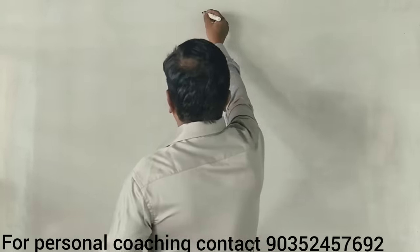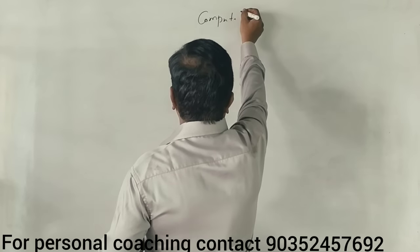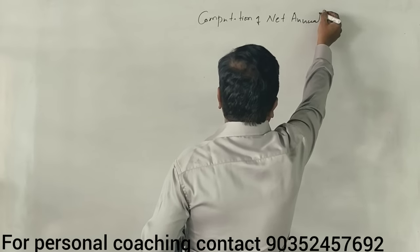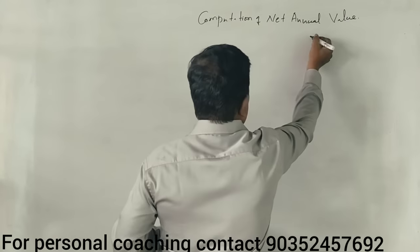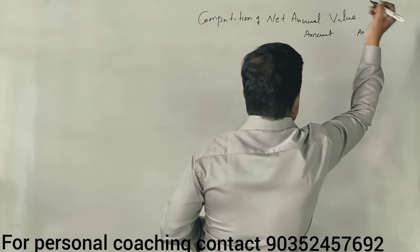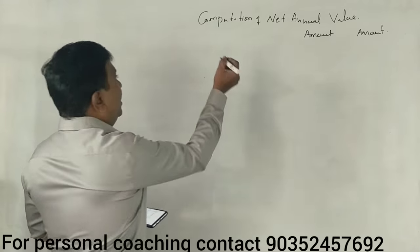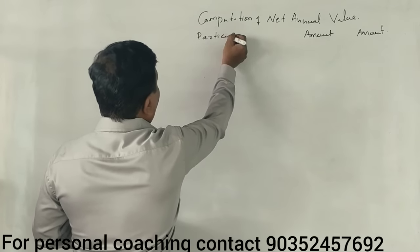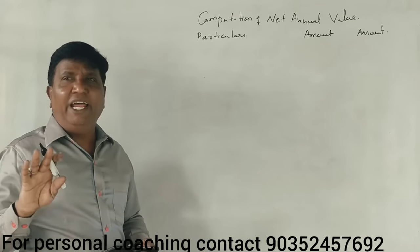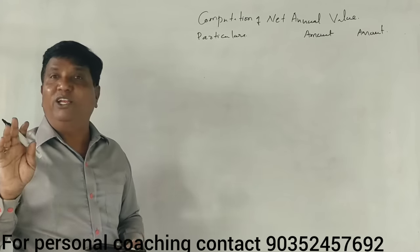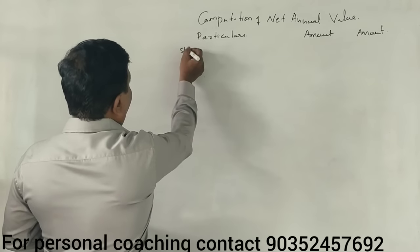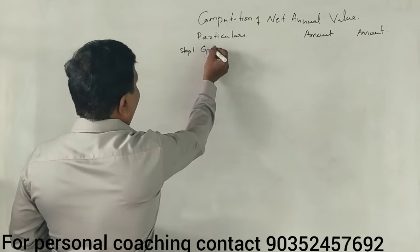First, computation of Net Annual Value. What is Net Annual Value? Net annual value is the amount in the inner column, amount in the outer column. We are going to do this. First, we have Gross Annual Value. Step number 1 is Gross Annual Value.